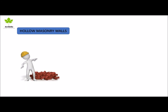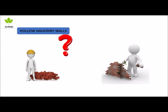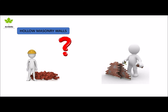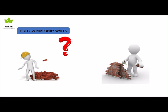Hollow masonry walls: hollow or cavity masonry walls are used to prevent moisture from reaching the interior of the building by providing hollow space between the outside and inside face of the wall. These walls also help in temperature control inside the building from outside.